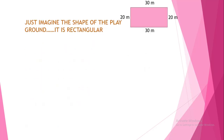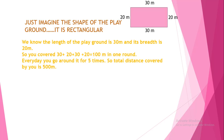Grandpa said, 'See Sonu, just imagine the shape of the playground — it is rectangular. We know that the length of the playground is 30 meters and its breadth is 20 meters. So you covered all 4 sides: 30, 20, 30, 20 — a total of 100 meters in one round. Every day you go around it 5 times, so the total distance covered by you is 500 meters.'